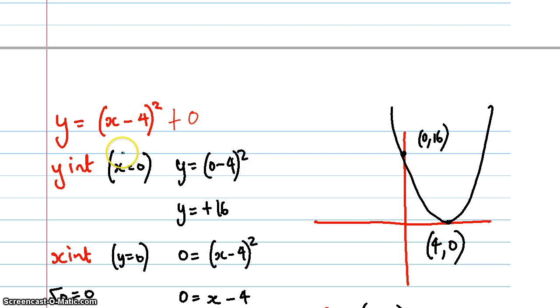Now I find the y-intercept. I make x equals 0, and I get 0 minus 4 squared, which just ends up being 16. So I pop that in.